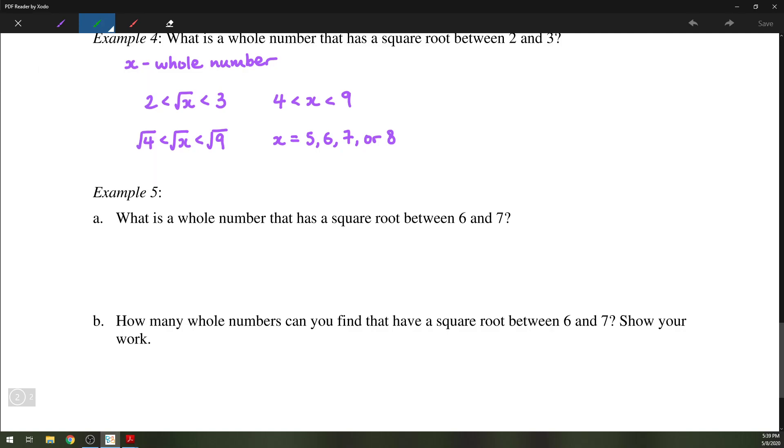Same kind of question we have. What if it was between 6 and 7? Same setup. 6 is less than the square root of x is less than 7, which means the square root of 36 is less than the square root of x is less than the square root of 49, which means x is somewhere between 36 and 49.